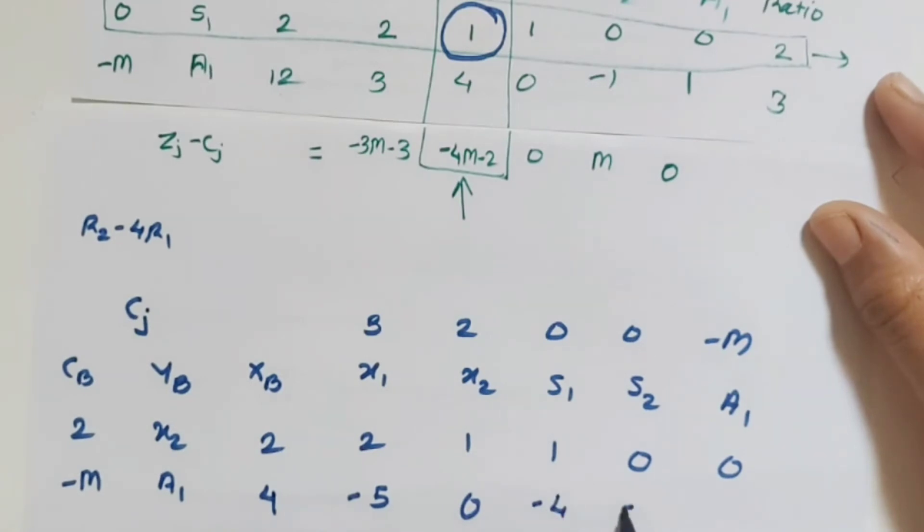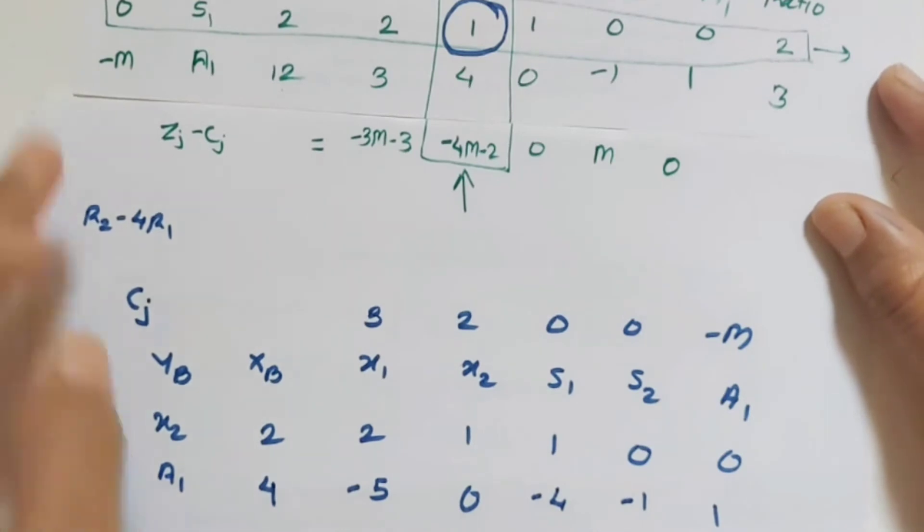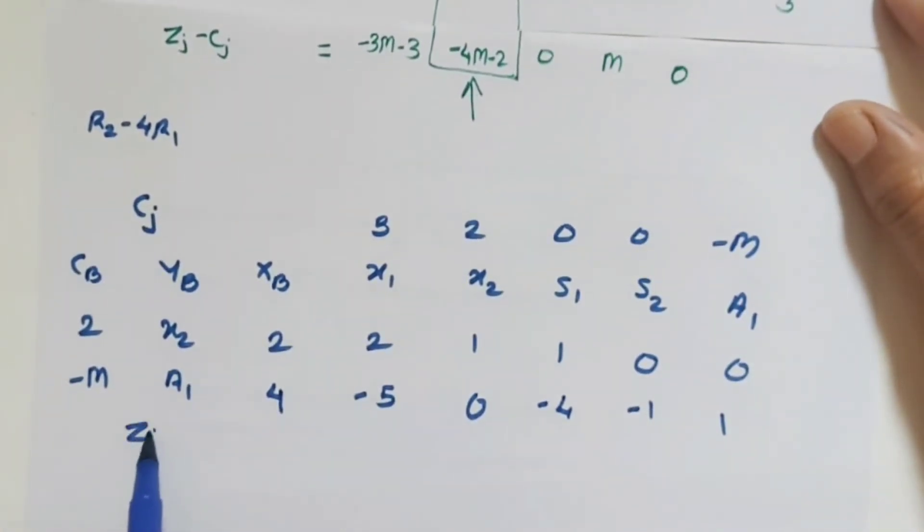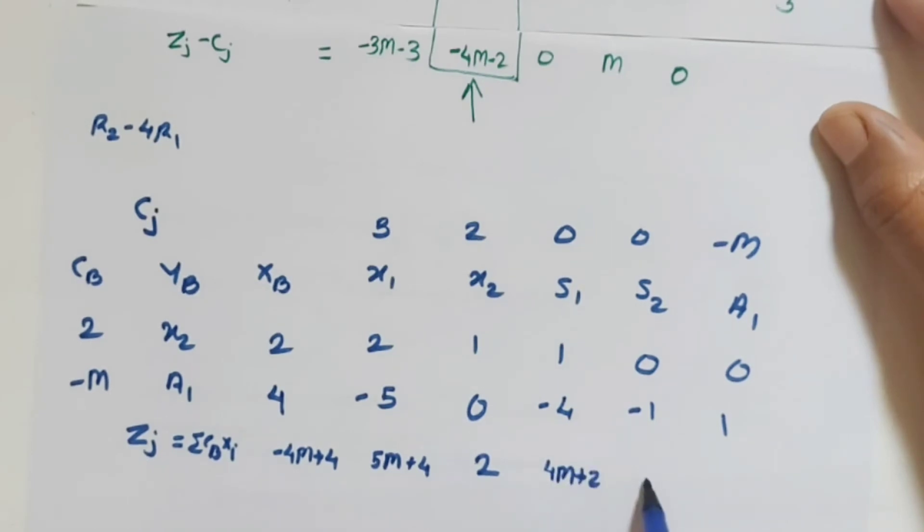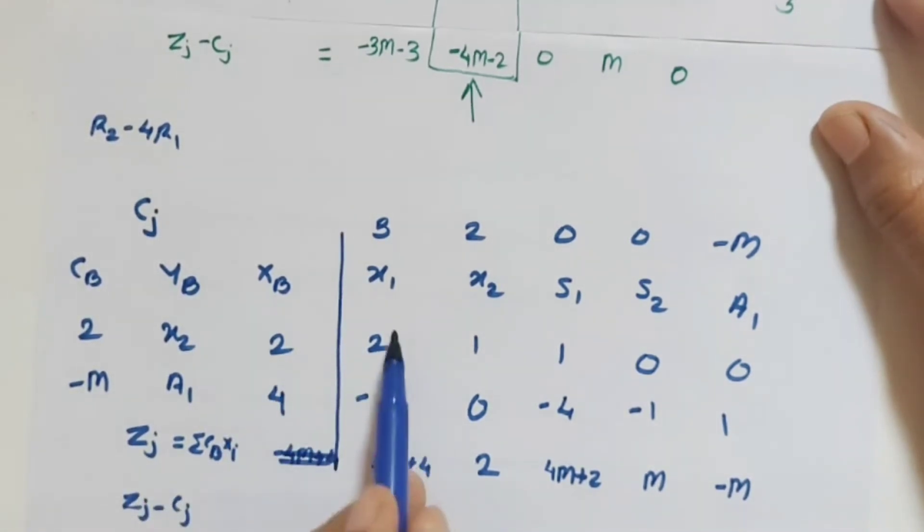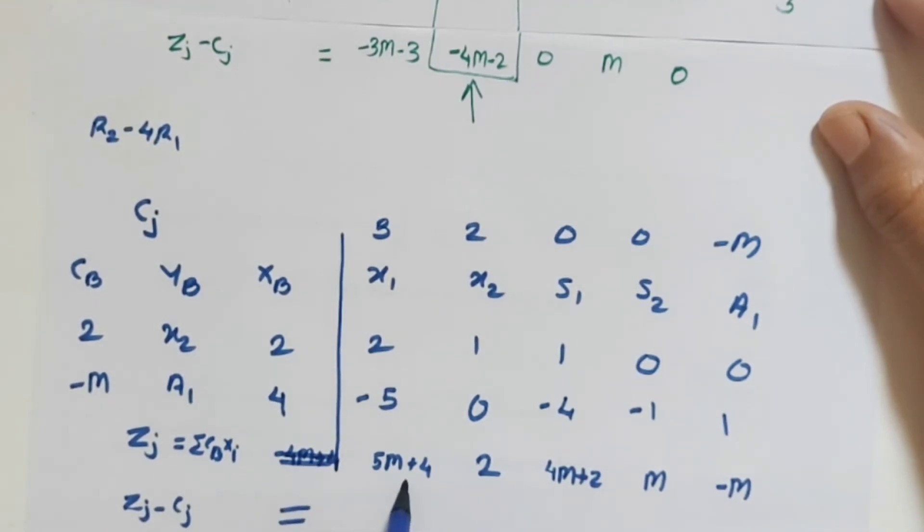Next find out zj. So here zj is product of this term plus that. So here 4 minus 4m plus 4. Then next is 5m plus 4. Next is 2. Then here it is 4m plus 2. Then m, minus m, 0. Next zj minus cj. So zj minus cj: here it is 5m plus 1. Then 0, 4m plus 2. M, next is 0. Zj minus cj is 5m plus 4 minus 3, so it is 5m plus 1. Then 0, 4m plus 2, m. Next is 0.